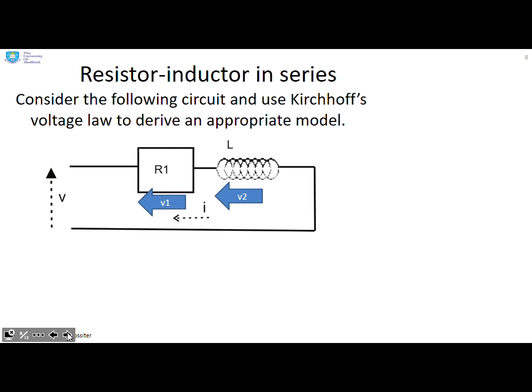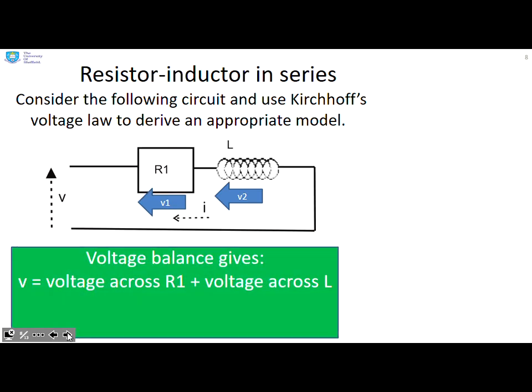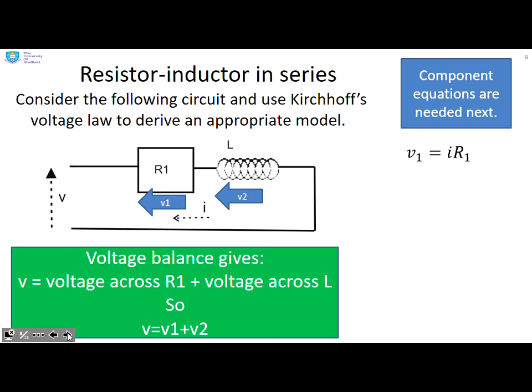What about a resistor inductor in series? This follows the same lines as the previous slide. So we write straight to V equals V1 plus V2. V1 the voltage across the resistor, V2 the voltage across the inductor. We need the component equations. So we get V1 equals i R1 and V2 equals L di/dt.